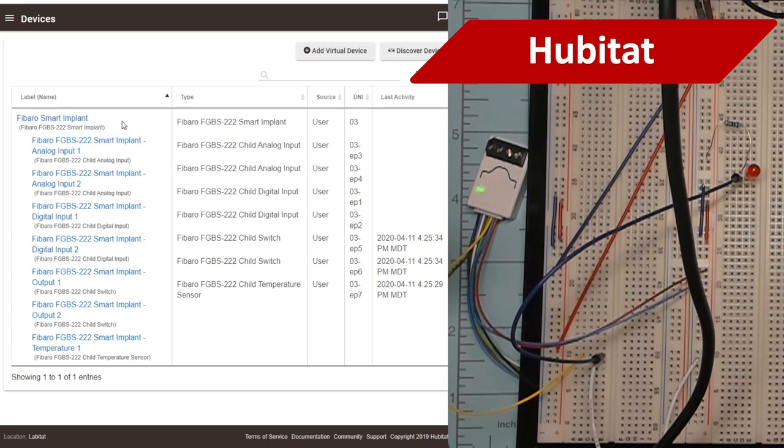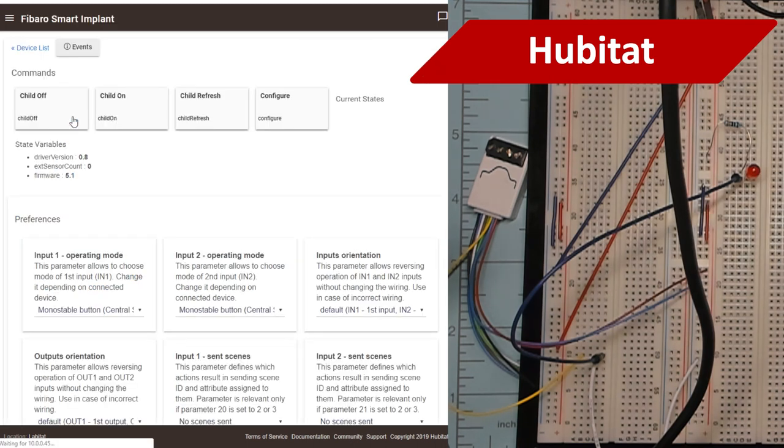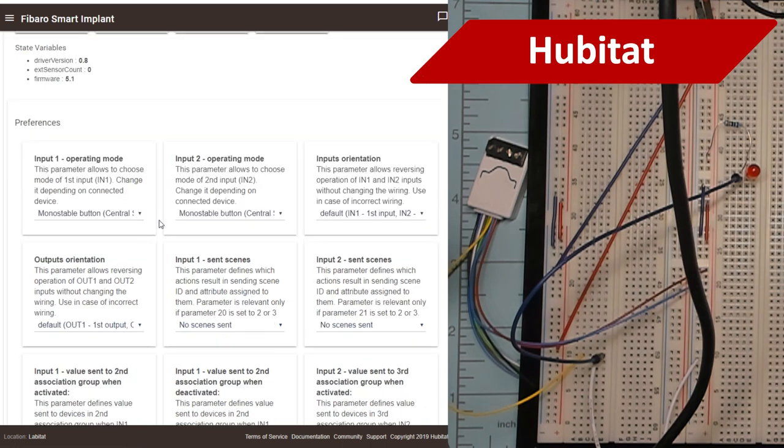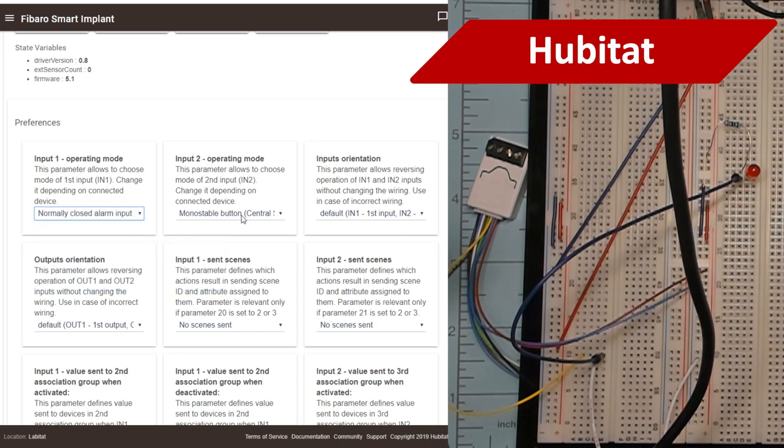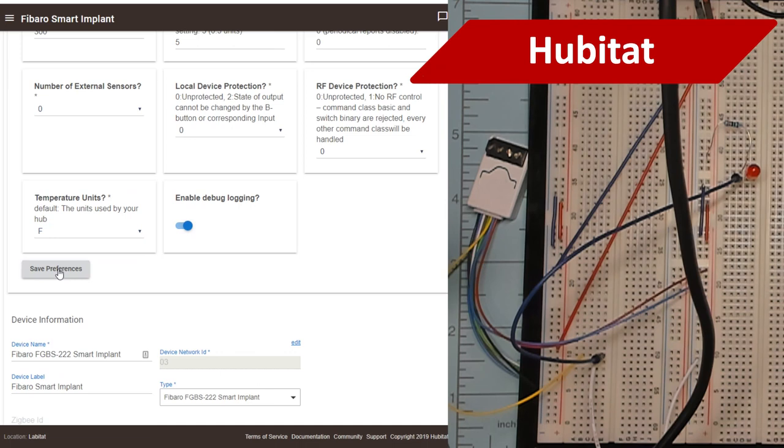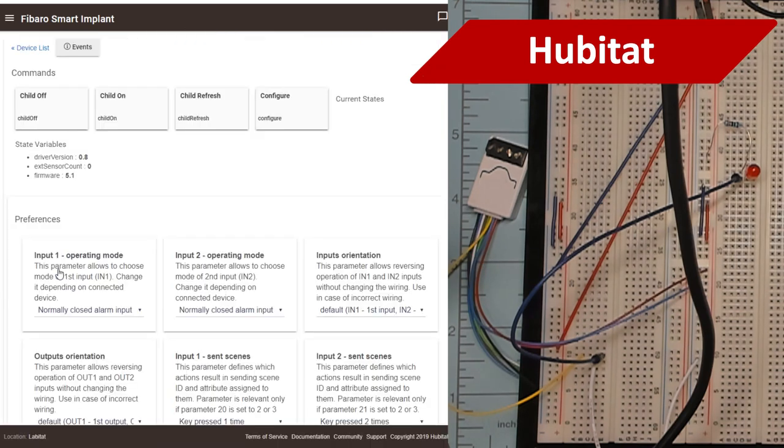You'll see seven child devices. For our alarm panel project, we're only worried about the digital inputs, which is our magnetic reed switch. Go into the main device page and set the parameters. On the parameters, I'm only going to worry about the operating modes for input one and input two, since I'm only using this for contact switch monitoring. Save the preferences. Then press the configure button on the main device page.